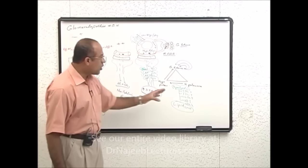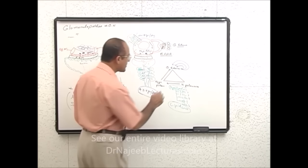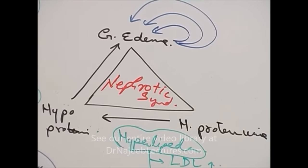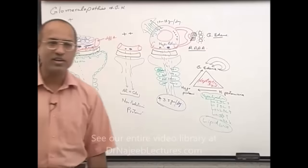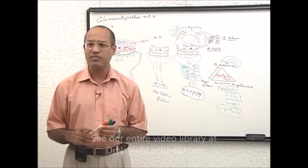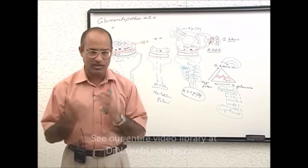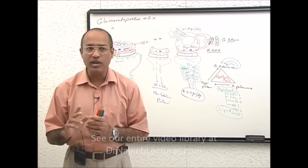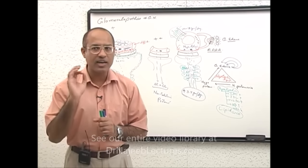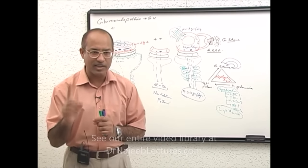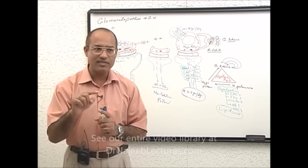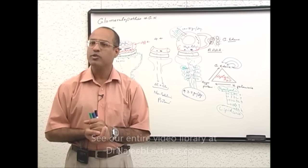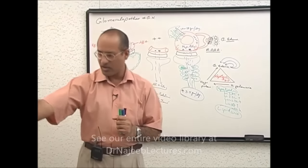This whole picture is called nephrotic syndrome. Nephrotic syndrome is a clinical-pathological condition which develops when there is significant damage to the glomeruli, leading to heavy proteinuria — with a cut-off of 3.5 grams per day in adults — and that is associated with hypoproteinemia, generalized edema, hyperlipidemia, and even lipiduria.